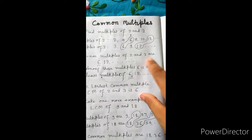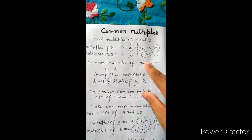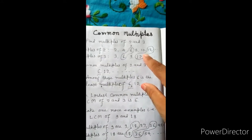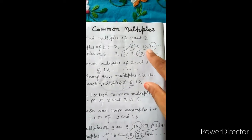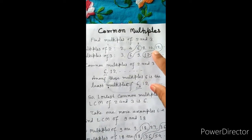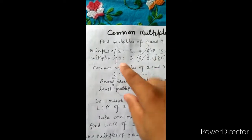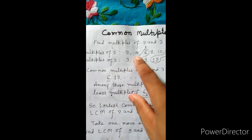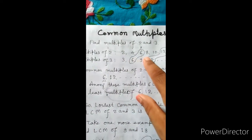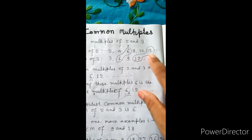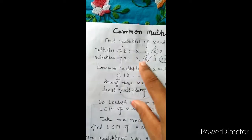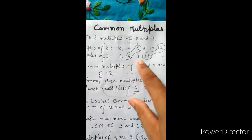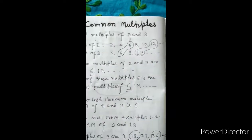Now, common multiples. Let's take 2 numbers: 2 and 3. Multiples of 2 are 2, 4, 6, 8, 10, 12 and so on. Multiples of 3 are 3, 6, 9, 12 and so on.